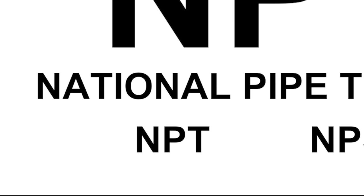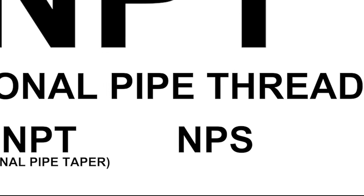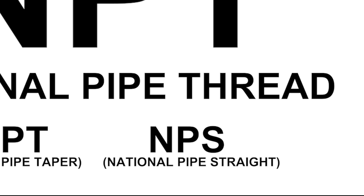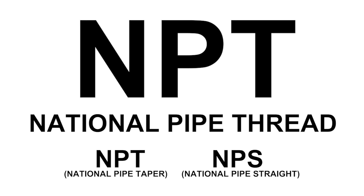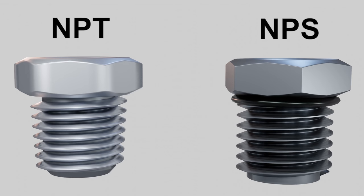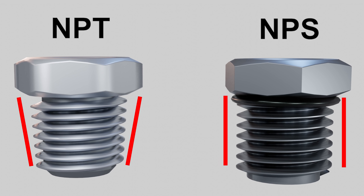NPT stands for National Pipe Taper and NPS stands for National Pipe Straight, and they both have their own uses in the plumbing world. If we look at both types of threads side by side, the first thing we could notice is that the tapered threads are in fact tapered or slightly conical, meaning that if we would continue these lines, they would eventually meet up, as opposed to straight threads which are parallel to each other and would never meet.